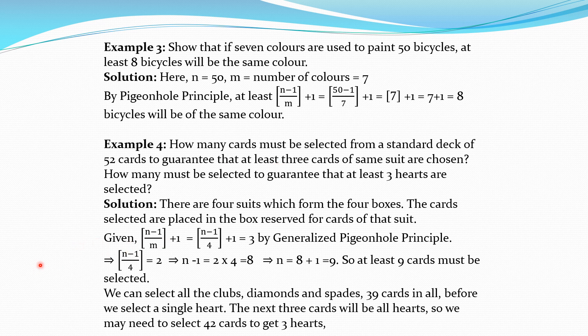Solving this: (N-1)/4 equals 2, so N-1 equals 4 times 2, which is 8. Therefore N equals 9. So we must select at least 9 cards so that we will definitely get at least 3 cards of the same suit.